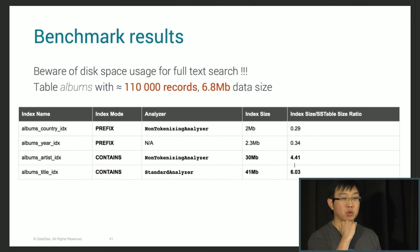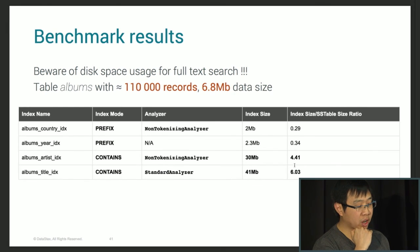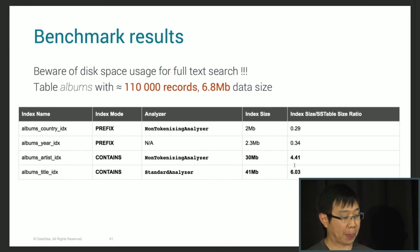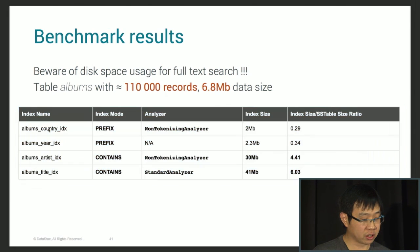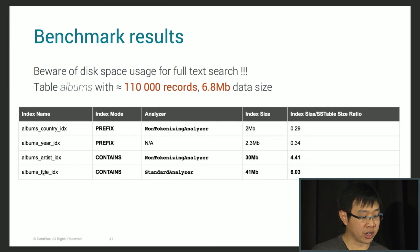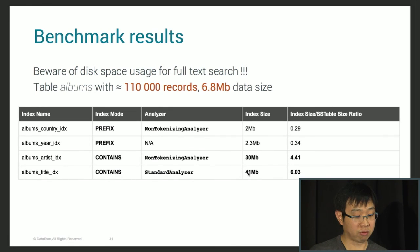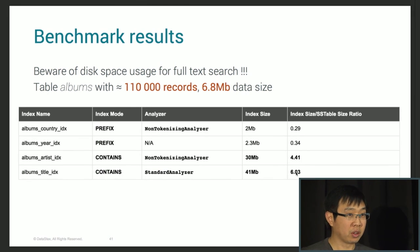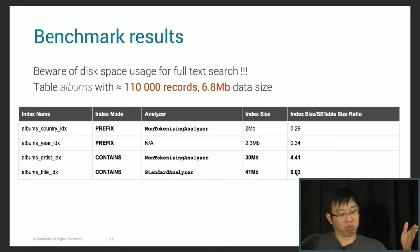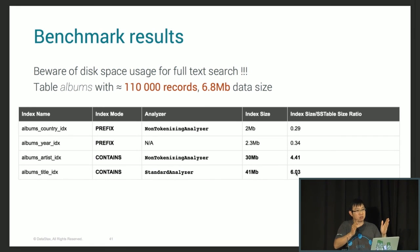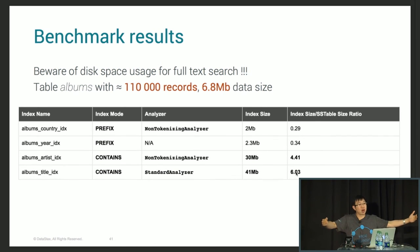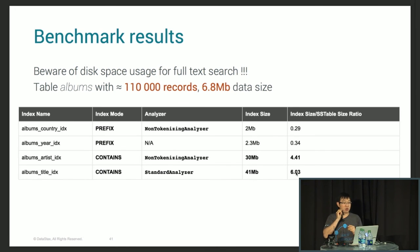Also be aware of disk space usage. In my album table with 110,000 records, the raw SSTable took 6.8 megabytes on disk. My country, numeric, and text indexes with prefix and non-tokenizing analyzer took only 2 megabytes. But the worst case is the title index using 'contains' mode with the standard analyzer and full-text search — it took 41 megabytes, six times more than the original data. This is because 'contains' mode splits all text data into substrings, so a long title generates many substrings. Be very careful when using 'contains' mode.